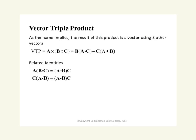A second type of product between three vectors that appears in electromagnetics derivations is the vector triple product. As the name implies, it uses three vectors and its result is a vector. In the vector triple product formula, you do a cross product between B and C first, and then cross product the result with A.